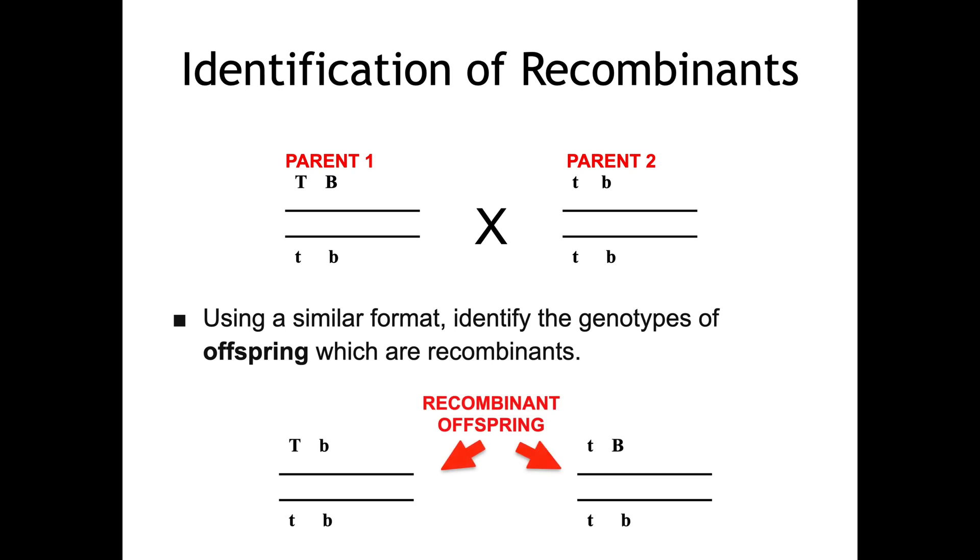So using a similar format, what we're saying here is the recombinant offspring are as follows. How is it possible to have achieved that?